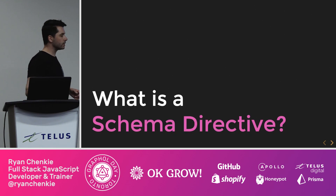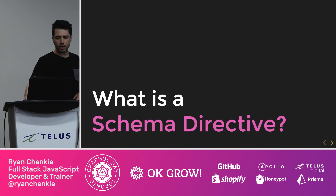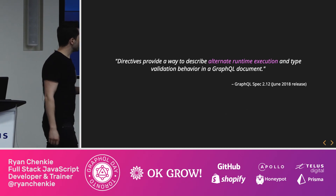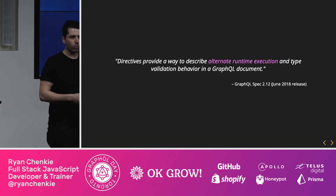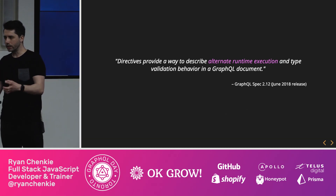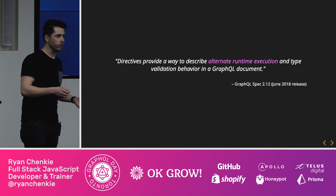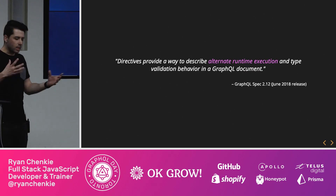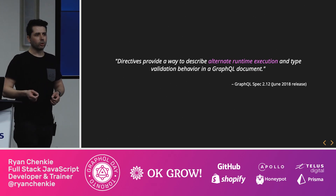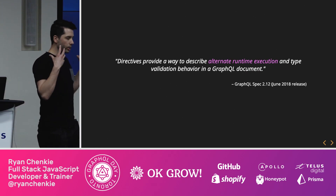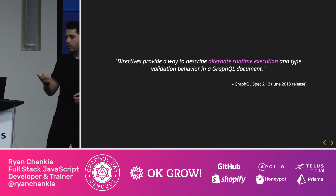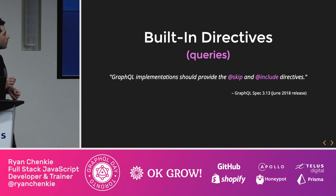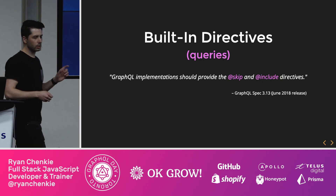So let's get into it now. What is a schema directive exactly? Well, we could look at the GraphQL spec and we could see that schema directives are kind of this way to provide an alternate runtime execution for resolving something out of GraphQL. You might have a schema that is set to resolve something in a certain way, and you might write a directive so that you can affect the behavior of that resolution at runtime.